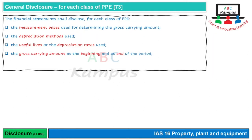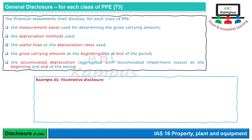Iske baad batana hai Gross Carrying Amount at the beginning and at the end of period. Agar Cost Model use kar rahe hain to cost hai Gross Carrying Amount — yani accumulated depreciation aur impairment losses wagera less kiye baghair. Agar Revaluation Model use kar rahe hain to fair value par show karte hain, without deducting any subsequent accumulated depreciation. Saath mein Accumulated Depreciation ki amount bhi beginning aur end par show karni hai, aur isme Accumulated Impairment Losses ko bhi aggregate kar diya jata hai.